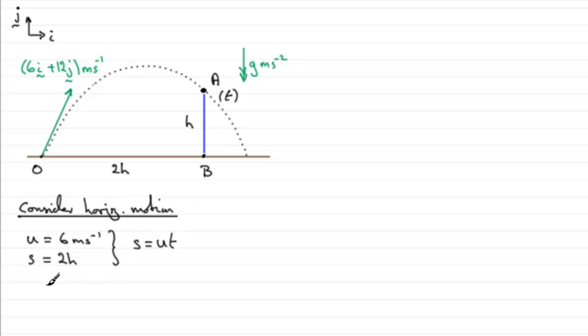So if we fill this in now, we've got that therefore S is 2h and equals U, 6 times T. So you can see that H, if we divide both sides by 2, H equals 3t. And we can use this value now when we consider the vertical motion.